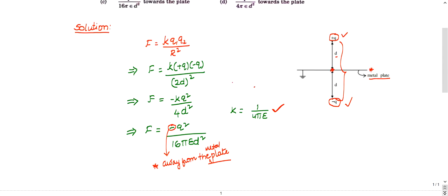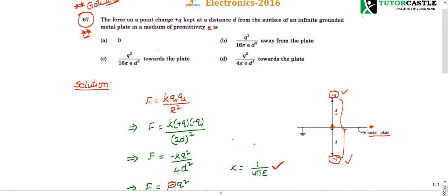If you know this answer, you can directly take this. The right choice is it can be b or c. It should be away from the metal plate, so answer is b. Option b is the right choice.